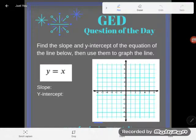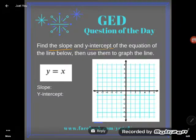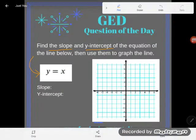Hey GED students, it's GED question of the day time. Our question today says find the slope and y-intercept of the equation of the line below, and there's the equation of the line, and then use them to graph the line.